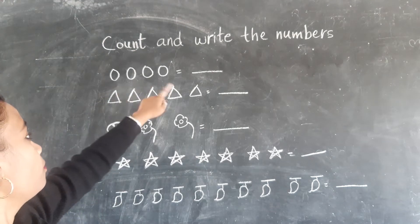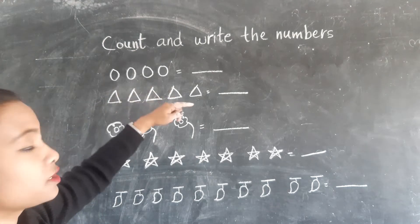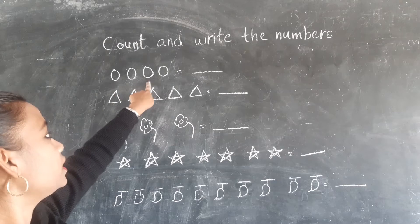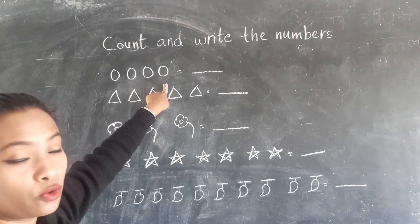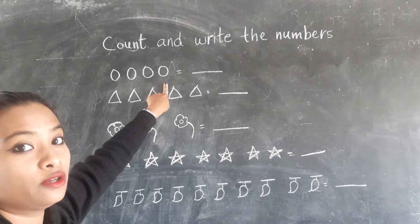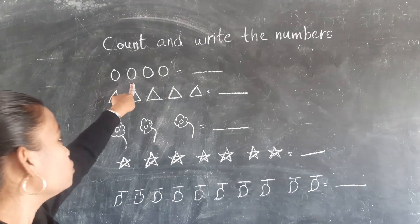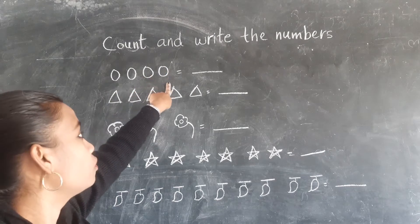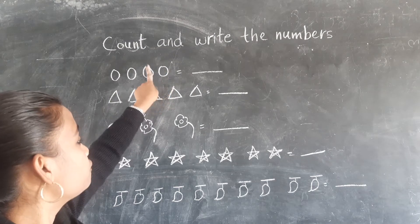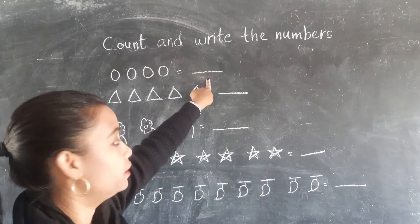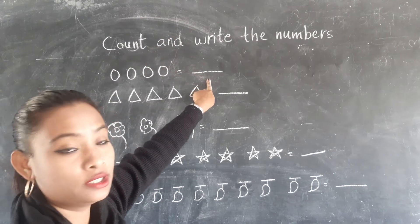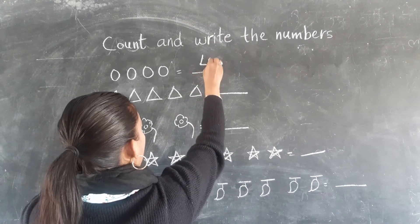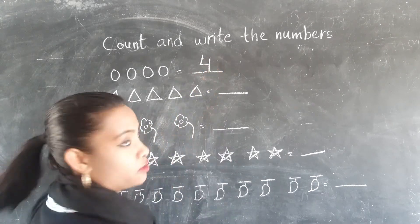So first one, how many circles are there? 1, 2, 3 and 4. Once again, 1, 2, 3 and 4. So you have to write 4 here on the blank space, like this. Alright?